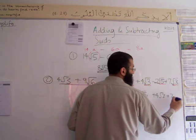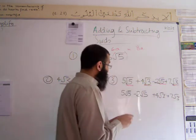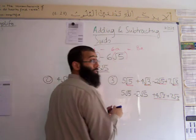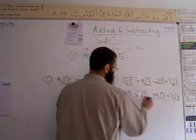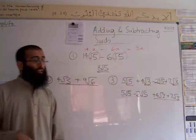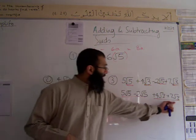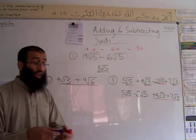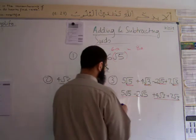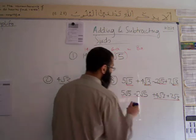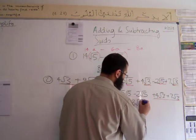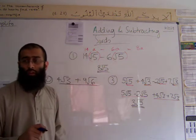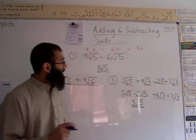And we're going to add 7 root 3. The brown part will simplify over here and the red part over here. So we have 5 root 5 minus 2 root 5, that will give us 3 root 5. Then we have 4 root 3 plus 7 root 3. Nika? 11 root 3.